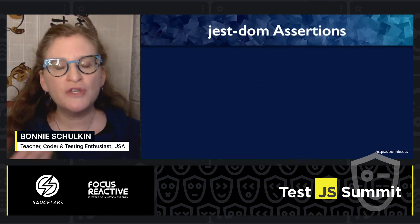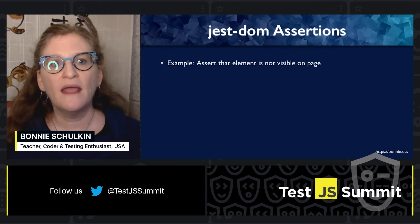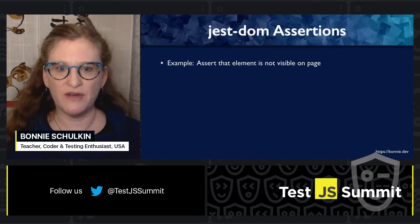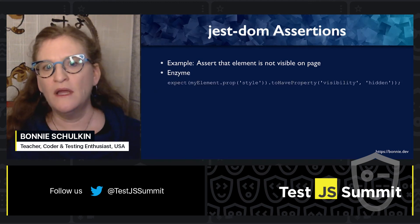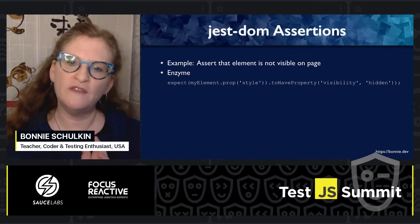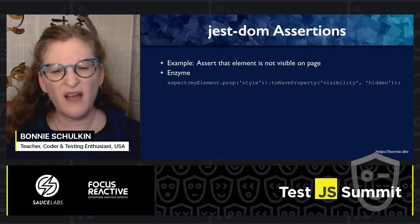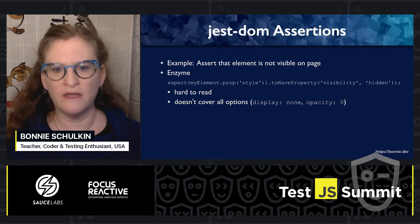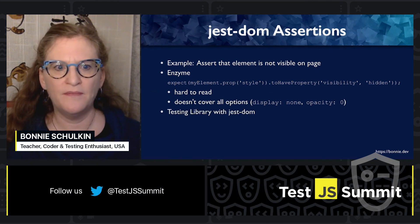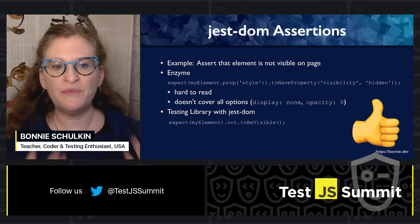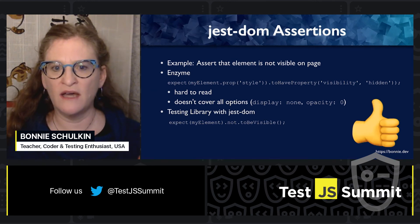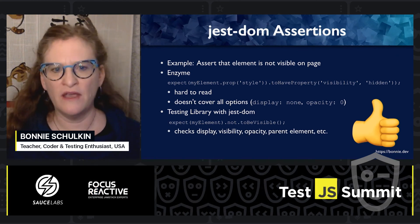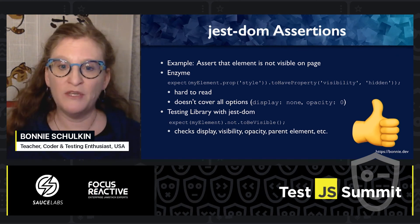Just DOM assertions also improve upon the assertions you can use in Enzyme. For example, asserting that an element is no longer visible after some user interaction. In Enzyme, you would expect that your property style will have visibility hidden — this is cumbersome code-wise and doesn't even cover all the possibilities. There are lots of other reasons your element might not be visible, like display and opacity. With Just DOM, you have the beautiful, succinct 'expect my element not to be visible.' It's more readable and it checks for all the reasons that your element might not be showing up on the page.